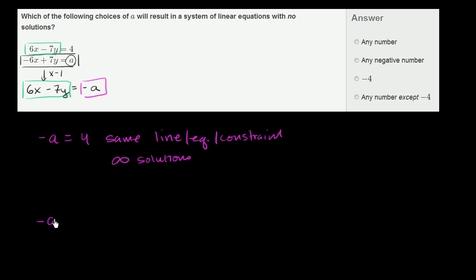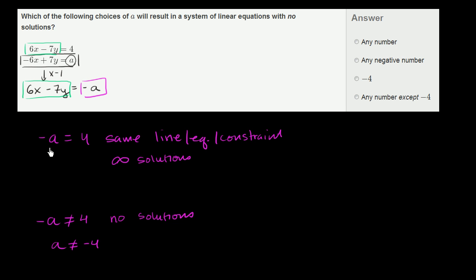On the other hand, if negative a is not equal to 4, there's no x and y that can satisfy both equations. Here you're saying: take 6 of the x's, subtract 7 of the y's, you get 4. If the other equation gives a different number for the same combination, there's never going to be an x and y that satisfies both. So if negative a is not equal to 4 — or equivalently, if a does not equal negative 4 — you're going to have no solutions. A can be any number except negative 4.